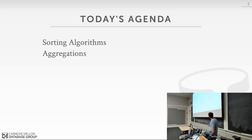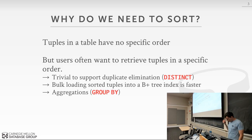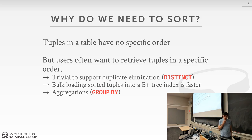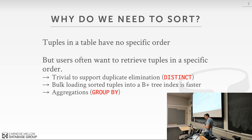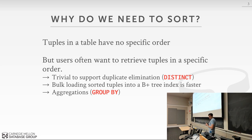Sorting and aggregating. It should be obvious why we need to sort — the relational model has no ordering, so the user might say in their SQL query, give me an ORDER BY, and therefore we have to sort it. But there can also be other scenarios where certain algorithms or operators can be implemented more efficiently by sorting, even though the user didn't ask us to sort.